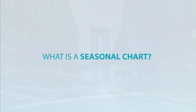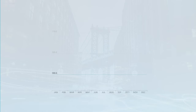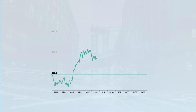What is a seasonality and a seasonal chart? Seasonalities are regular and predictable patterns that recur every calendar year. A seasonal chart always starts at 100% and depicts the change over time.